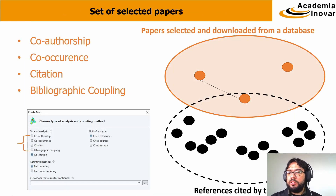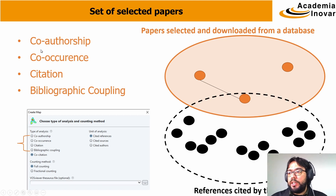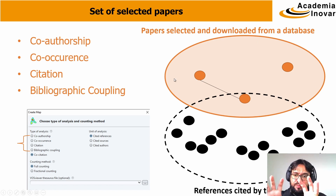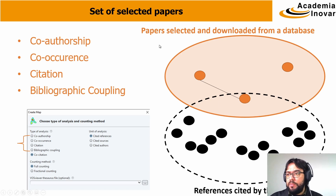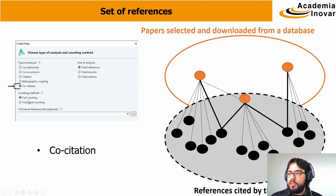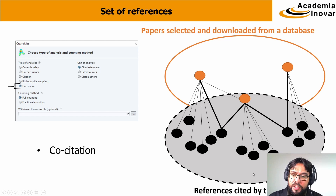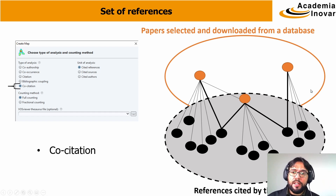For the first set — the papers that we selected and downloaded from the database — we can do the first four analyses in VOSviewer: co-authorship, co-occurrence, citation, and bibliographic coupling. All four of these analyses work with the first set of papers. On the other hand, the co-citation analysis — the last one available in this group in VOSviewer — analyzes the set of references cited by those downloaded papers. This is the first key differentiation we need to understand.